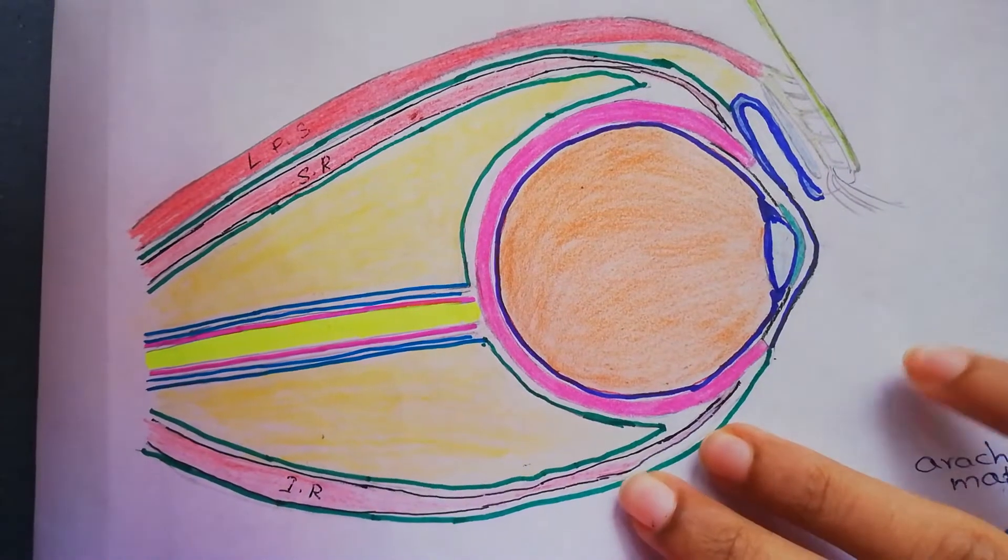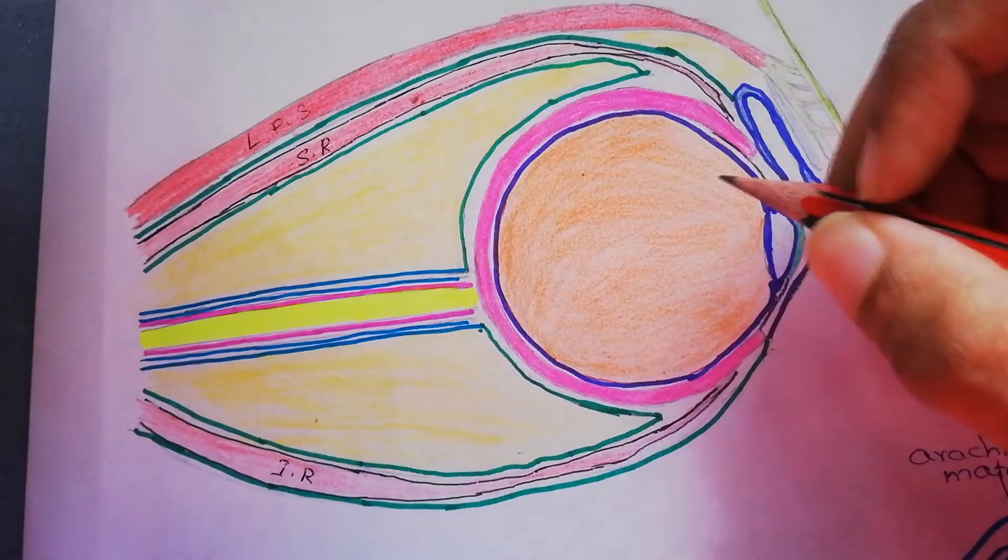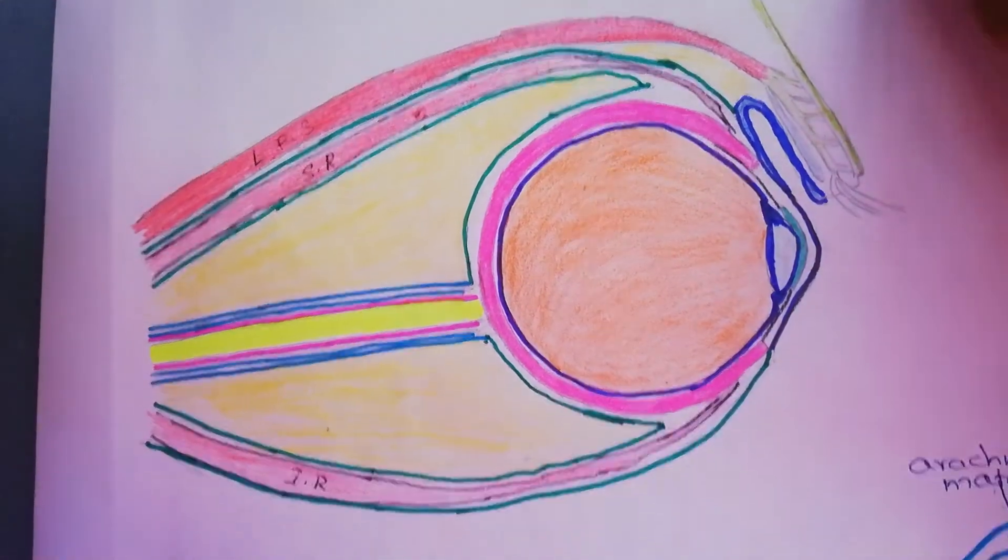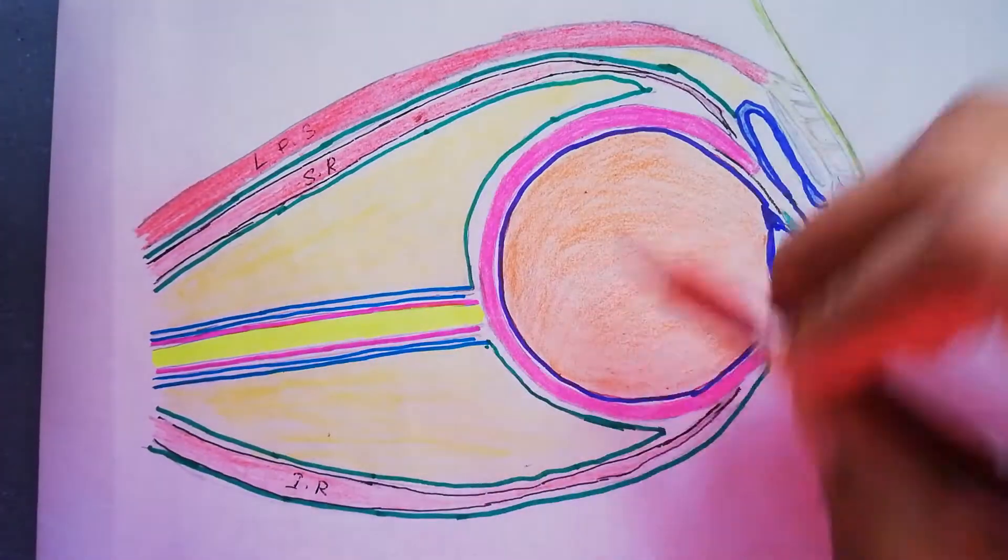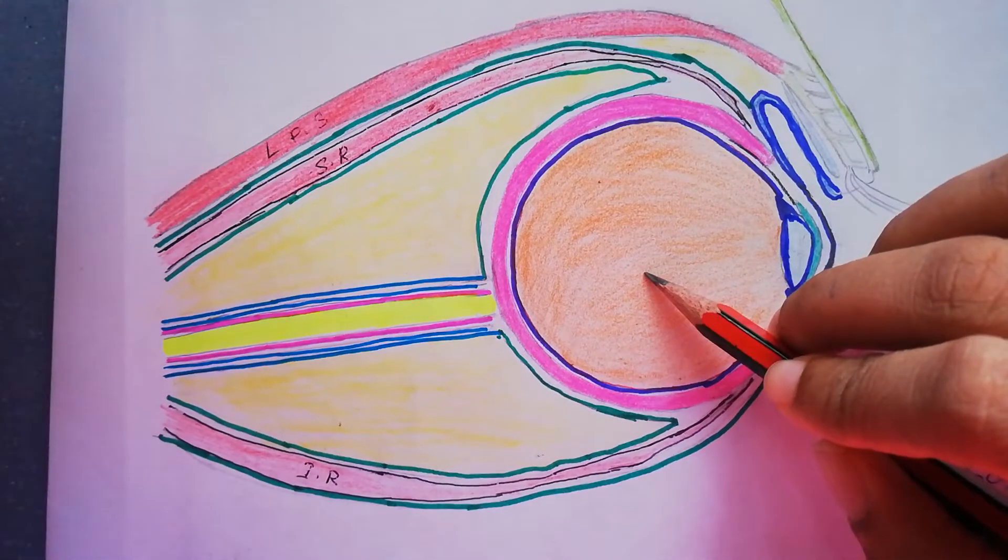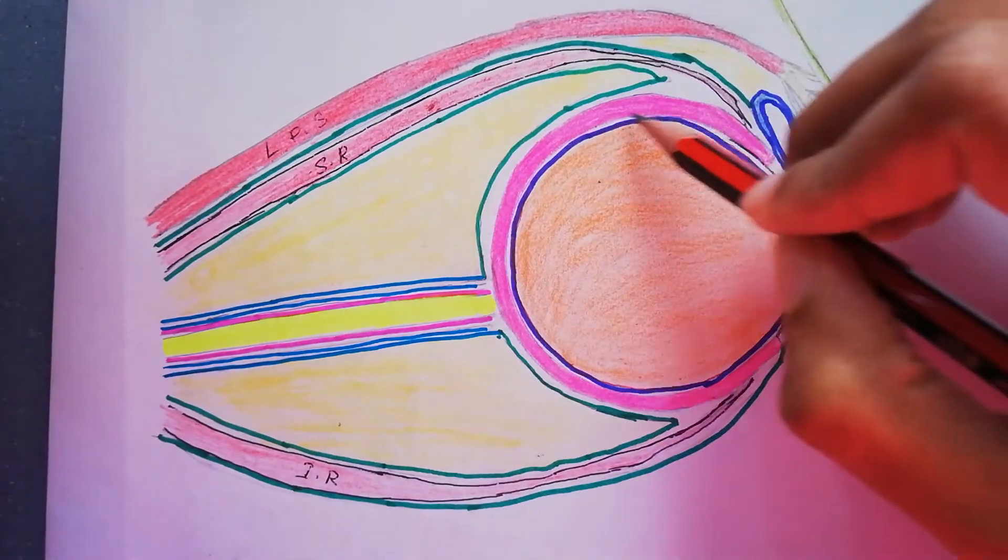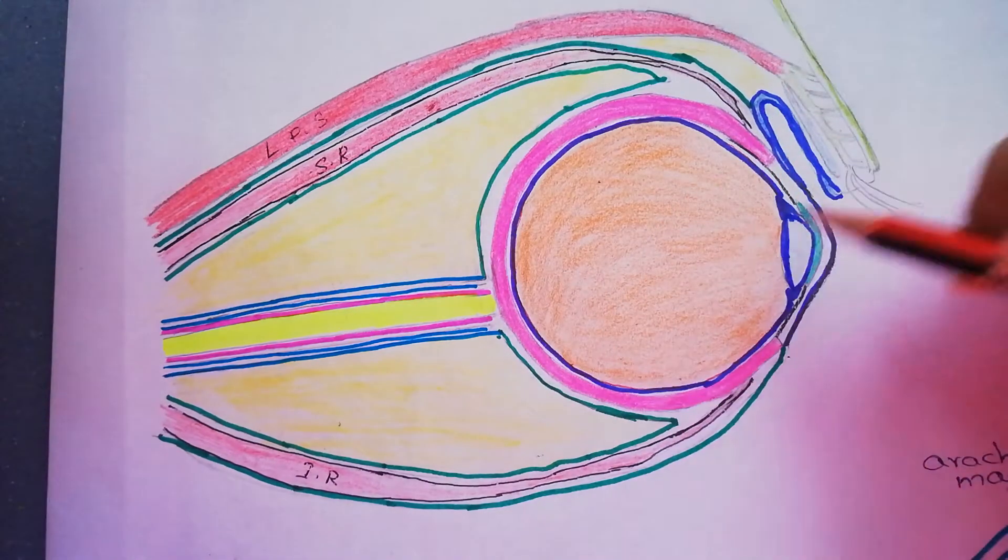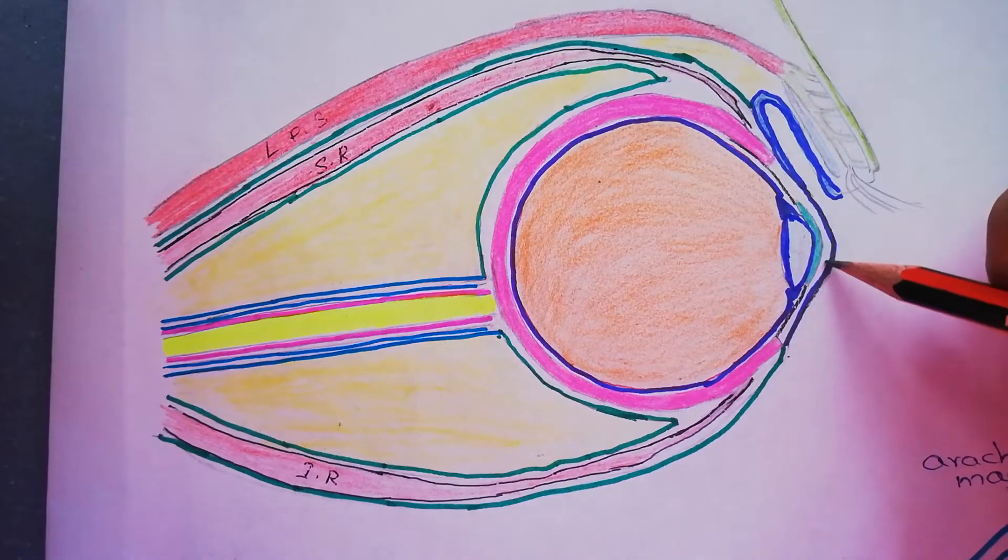Today we are going to talk about the facial sheath of the eyeball. Let's look at the sagittal section of eyeball and optic nerve. This is the lens, vitreous body, and here is the sclera which covers the posterior part of the eyeball, and this is the transparent anterior part, the cornea.